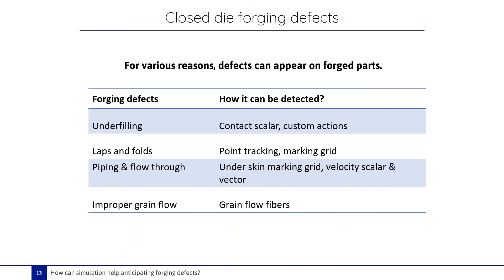Let's recap on the closed die forging defects and how they can be detected using specific tools in Forge. Underfilling can be detected by analyzing the contact scalar, and we can use custom action to detect all underfilling with a single click for any simulation. To identify folds, a point tracking feature is available, and it is also possible to use the marking grid. Piping defects can be detected with the under-skin marking grid, and also by analyzing the velocity scalar or vector — in zones where we have piping defects, the velocity scalar or vector is negligible. To check the quality of the grain flow or detect improper grain flow, we can use grain flow fibers and follow them during the whole forming simulation.